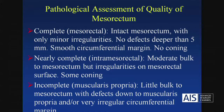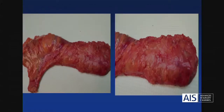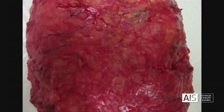If we were to do coronal sections, you can see the mesorectum anteriorly, which is thinner as we all know, and posteriorly, which is bulkier. You can see again how the plane here is at the mesorectal level.